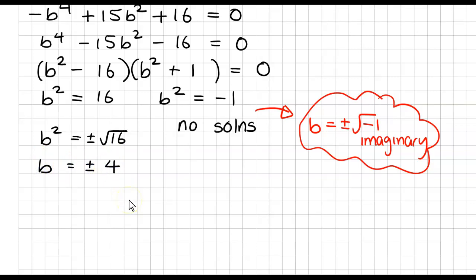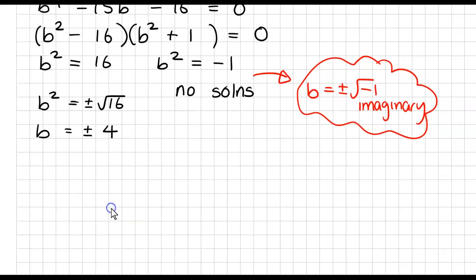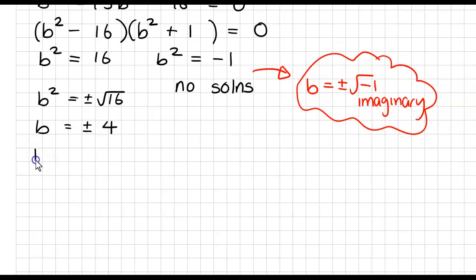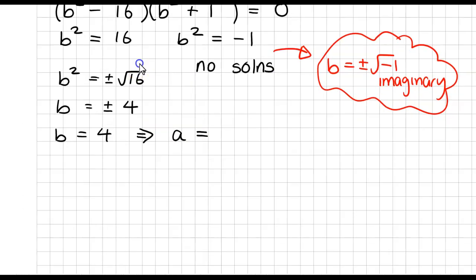Now, we need to find our A's that go with those then. So we'll say if B is equal to 4, this implies that A is equal to, so A from up on the top here was 4 over B. So this will be 4 over 4, which is 1.